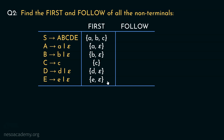We are done finding all the firsts of all the non-terminals. Now let's find out the follows of all the non-terminals. Coming to S, S doesn't appear in any of the right-hand sides of any of the productions. Therefore, in the follow of S, we are only having the symbol dollar. Now coming to A, A appears in this particular production rule's right-hand side. So the follow of A is actually the first of B. The first of B includes b and Epsilon. Remember, we are not going to include any Epsilon in the follows. Therefore, in the follow of A, we are going to have lowercase b.